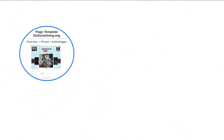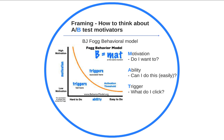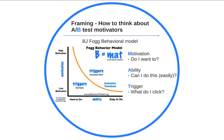Here's how we like to think about A-B testing. We've mentioned before BJ Fogg's behavioral model — super recommend studying this. Behavior is a sum of motivation, ability, and trigger. Motivation: do I want to do it? Ability: can I do it easily — is this going to take five minutes or five days? And then trigger: what do I click?